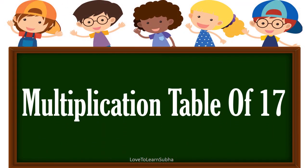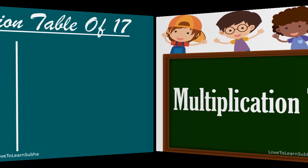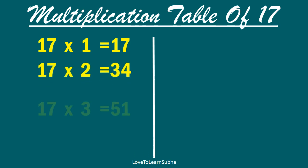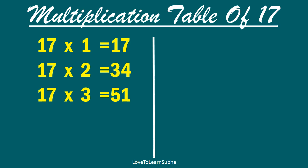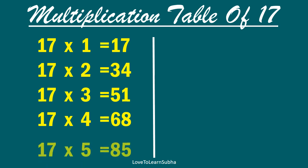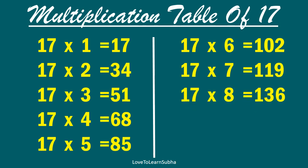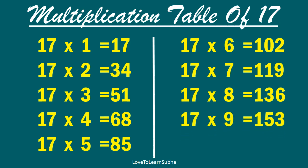Multiplication table of 17. 17×1 is 17, 17×2 is 34, 17×3 is 51, 17×4 is 68, 17×5 is 85, 17×6 is 102, 17×7 is 119, 17×8 is 136, 17×9 is 153.